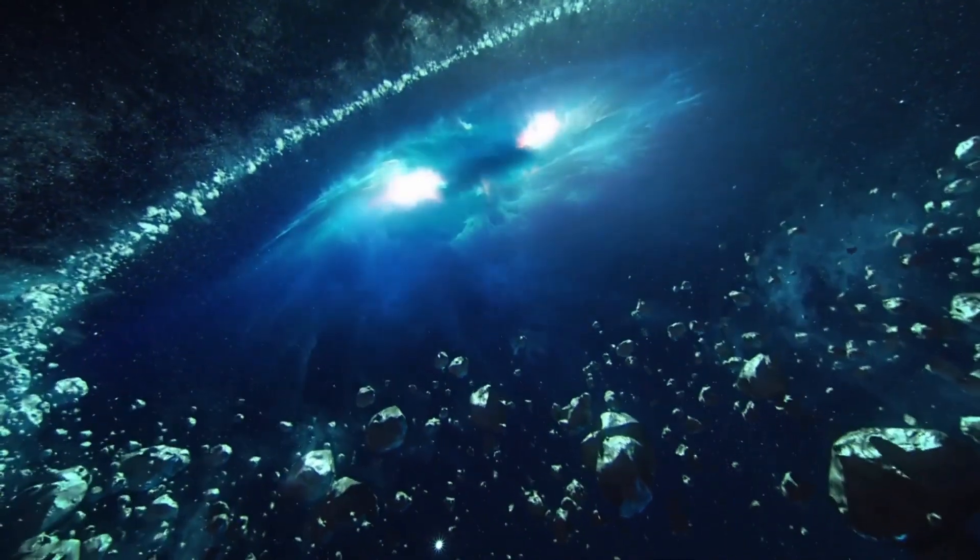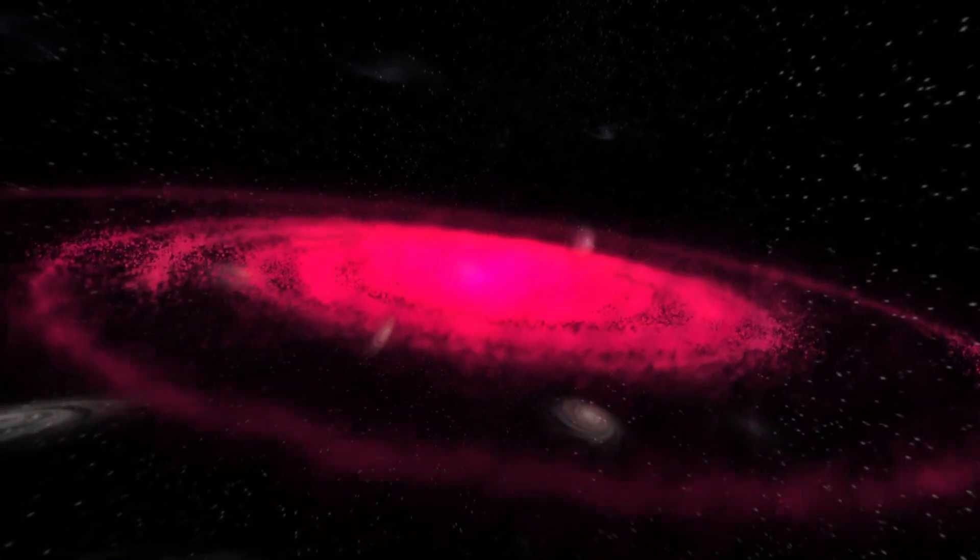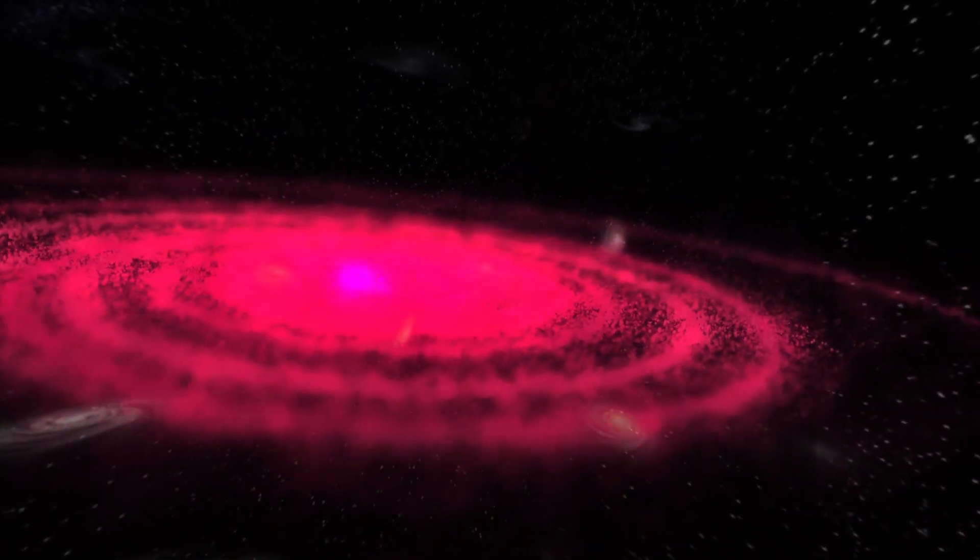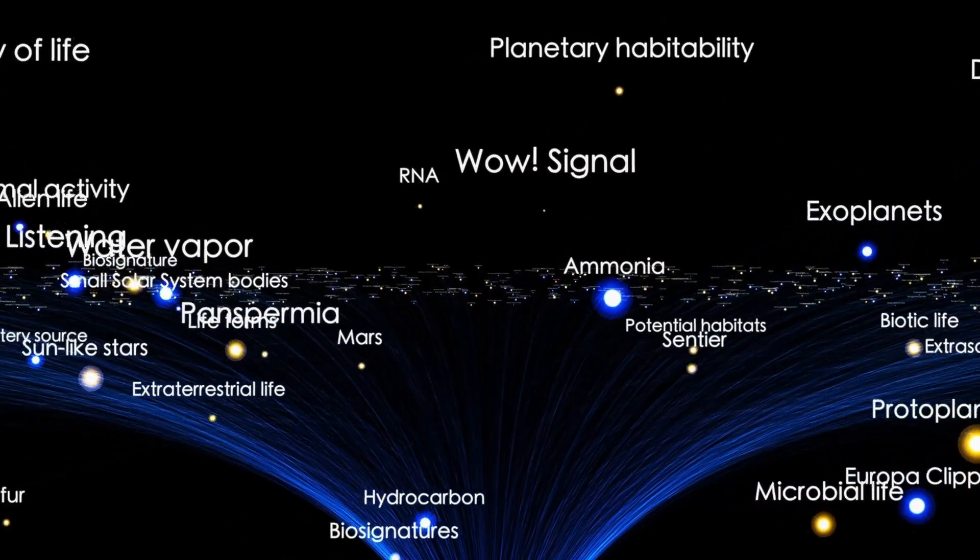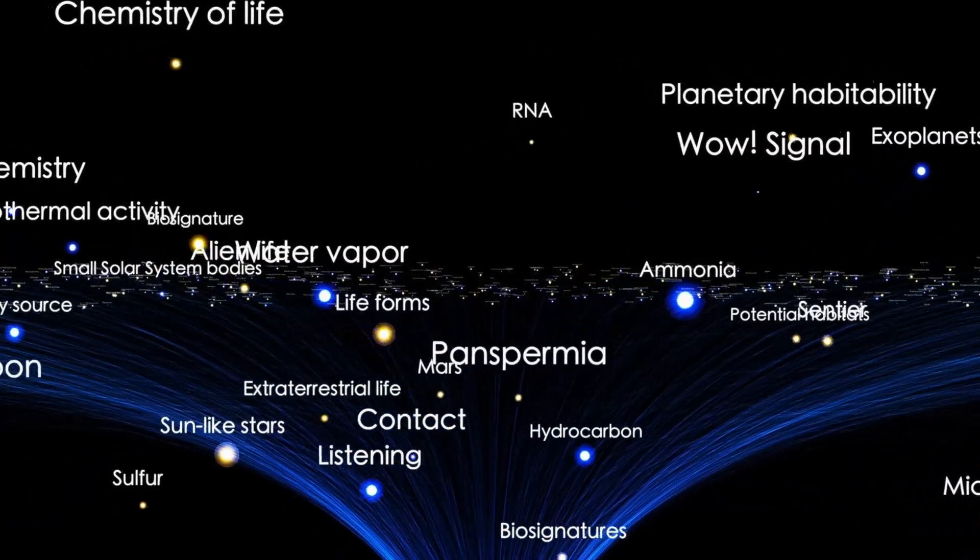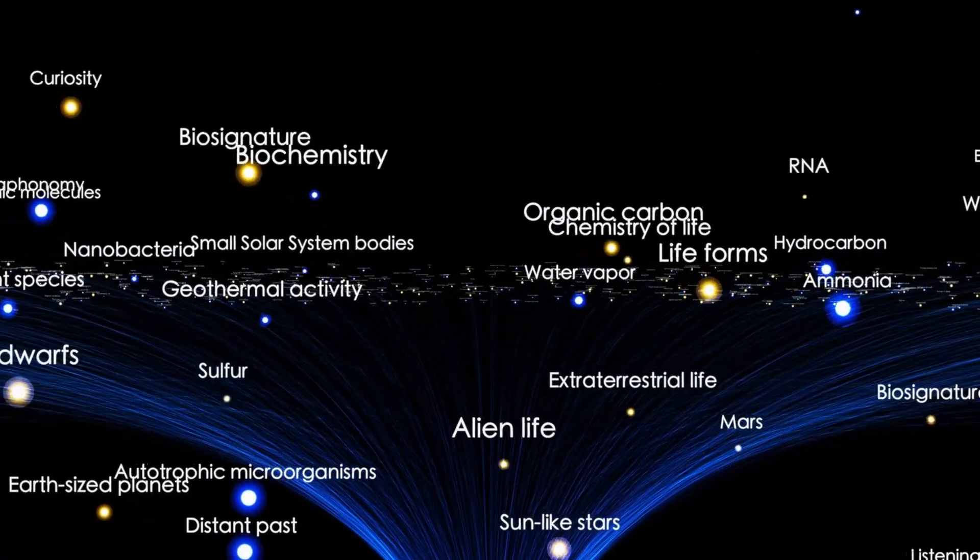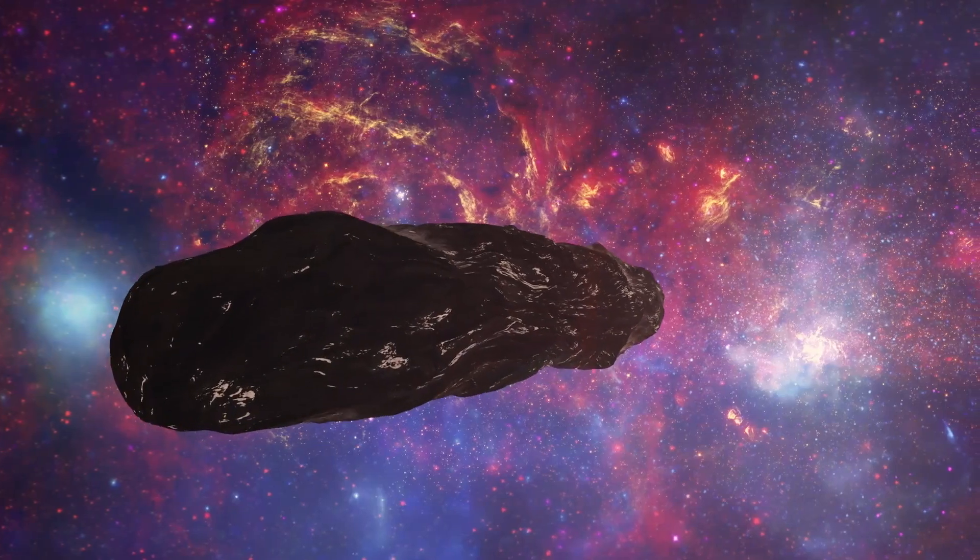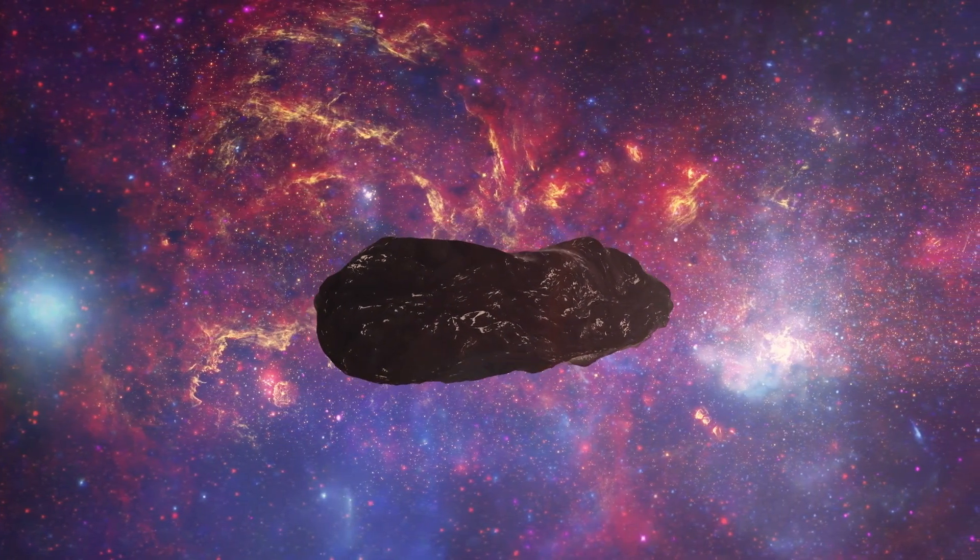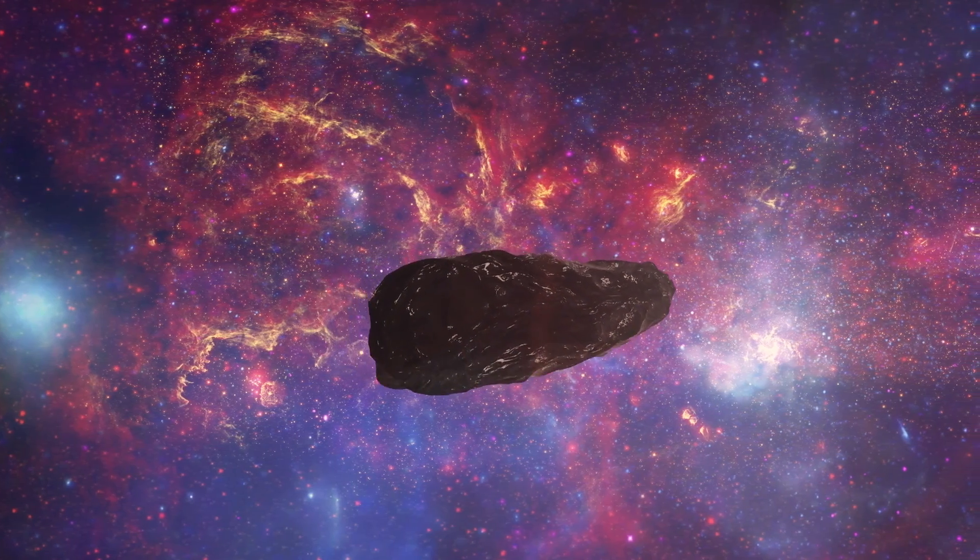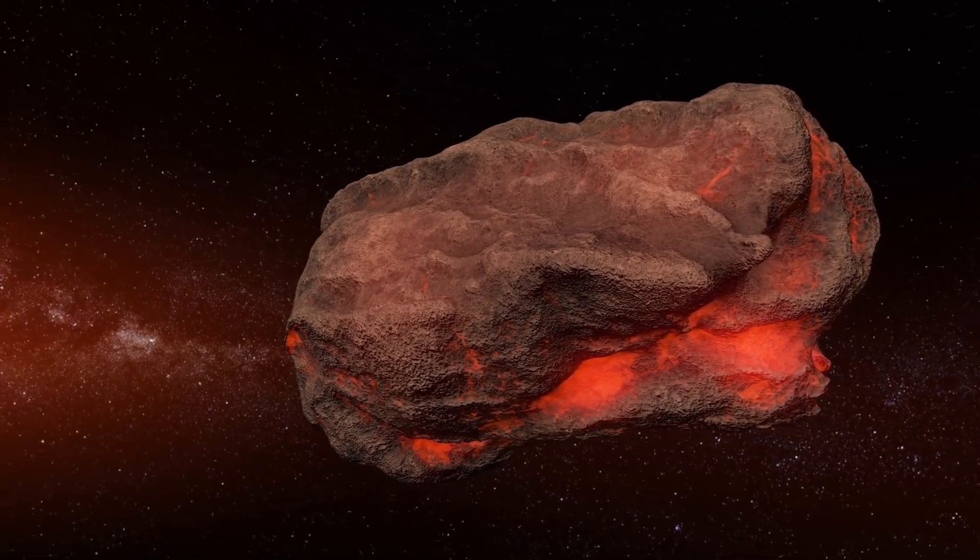If an alien object is cleverly disguised as a natural comet, hiding behind the Sun at perihelion could give it the perfect cover. From Earth's point of view, the Sun blocks our telescopes and instruments from seeing what's happening in that region. This means the object could change its speed, alter its course, or even release smaller probes without being noticed. The Sun's glare would mask all these activities. At the same time, being close to the Sun provides a strong source of energy. If the object were artificial, it could use this moment to recharge using solar power, or even refuel in some unknown way.